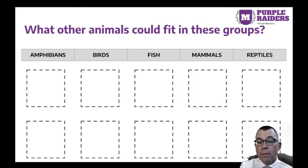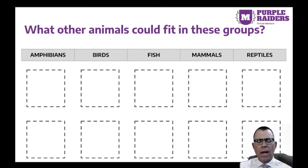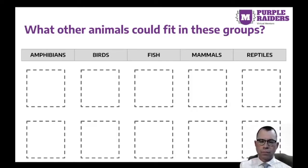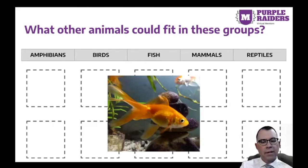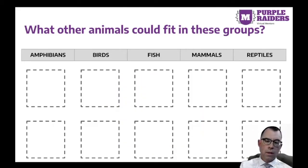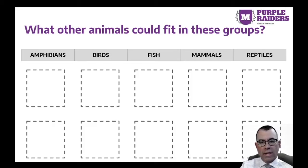What other animals could fit in these groups? Take a few seconds now to name an animal and then sort it into a group. Now let's try one together. This is a goldfish. How would you classify a goldfish? A goldfish is an animal with a backbone that is classified as a fish. How did you do with your classification?